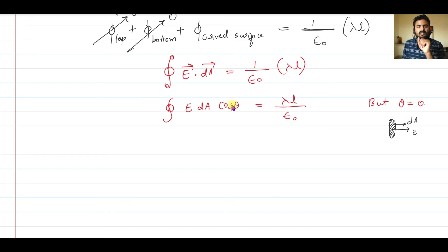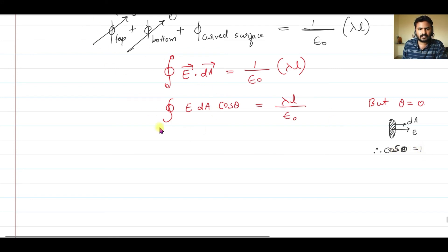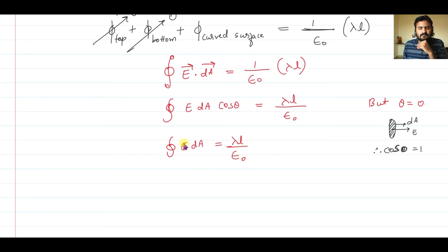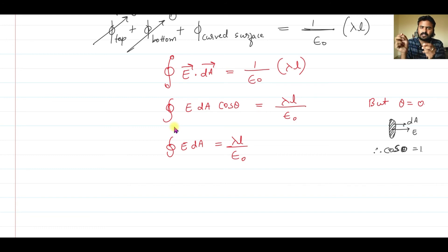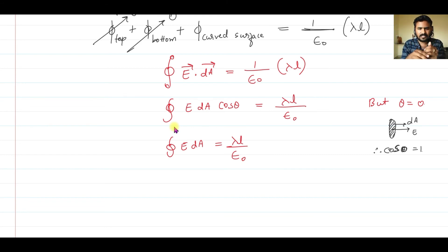Therefore, the closed integral of E dA equals lambda × L divided by ε₀. Now, the electric field E is the same at every point on the curved surface because every point on the cylinder surface is at the same distance r from the wire. So E can be taken outside the integral, giving E × ∫dA = lambda × L / ε₀.